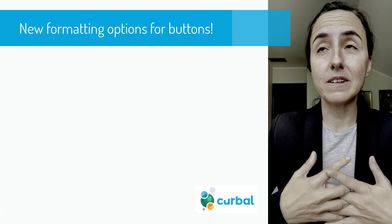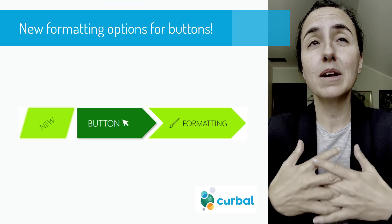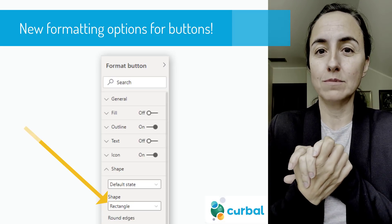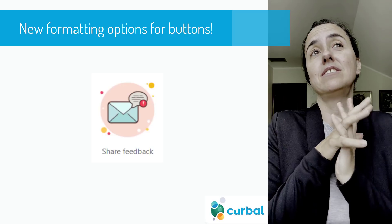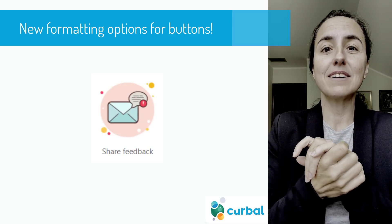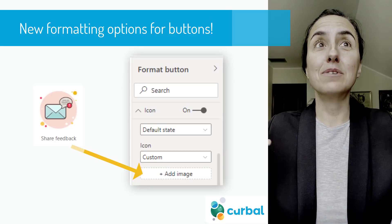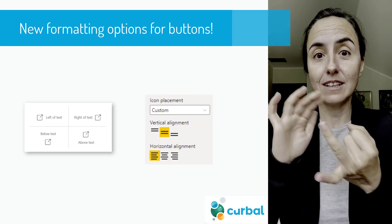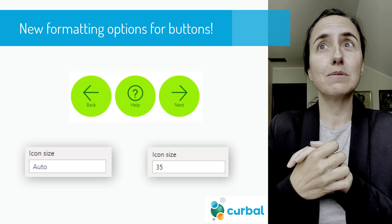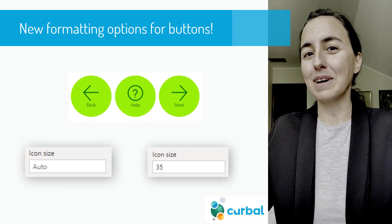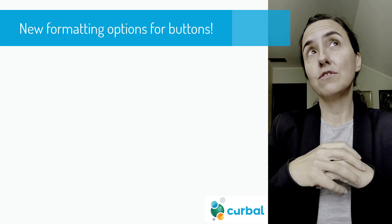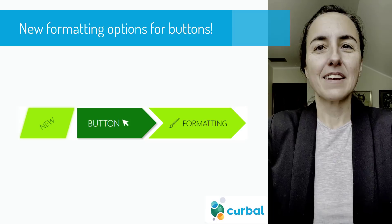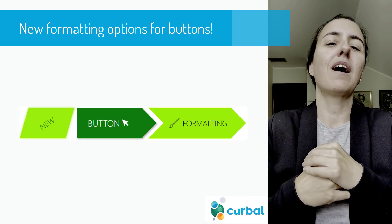The first update is about buttons. You now have buttons in many, many shapes — before you could just pick the rectangular one, but now you have a ton more shapes to pick from. Buttons also have the possibility to have custom images as an icon. You can change the placement, alignment, and size of the icon. You can also add shadow, glow, and text rotation. This will cover most of the needs you'll have when working with buttons.